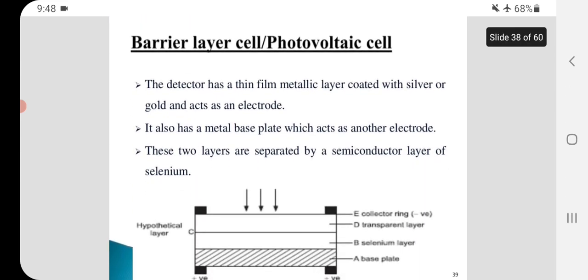Barrier layer cell or photovoltaic cell: The detector has a thin film metallic layer coated with silver or gold acting as one electrode. It also has a metal base plate which acts as another electrode. These two layers are separated by a semiconductor layer of selenium.